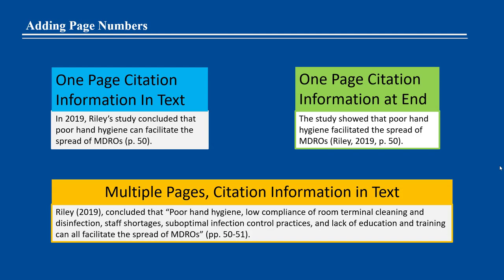To cite a specific part of a source, include information about the specific part, like a page number. Individual page quotations should begin with a 'p.' period, while multiple page numbers should begin with a double 'pp.' period. A comma and a space should separate the publication date and the page number.